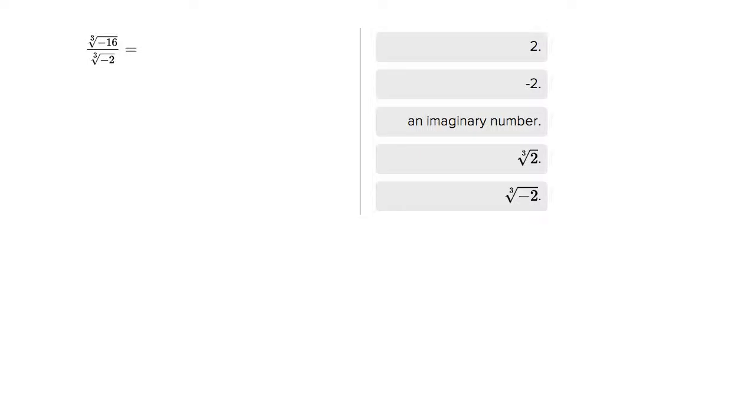This looks like a super weird problem. We've got radicals, cube roots, and underneath the cube root, negative numbers—a whole bunch of stuff that you're not used to seeing.